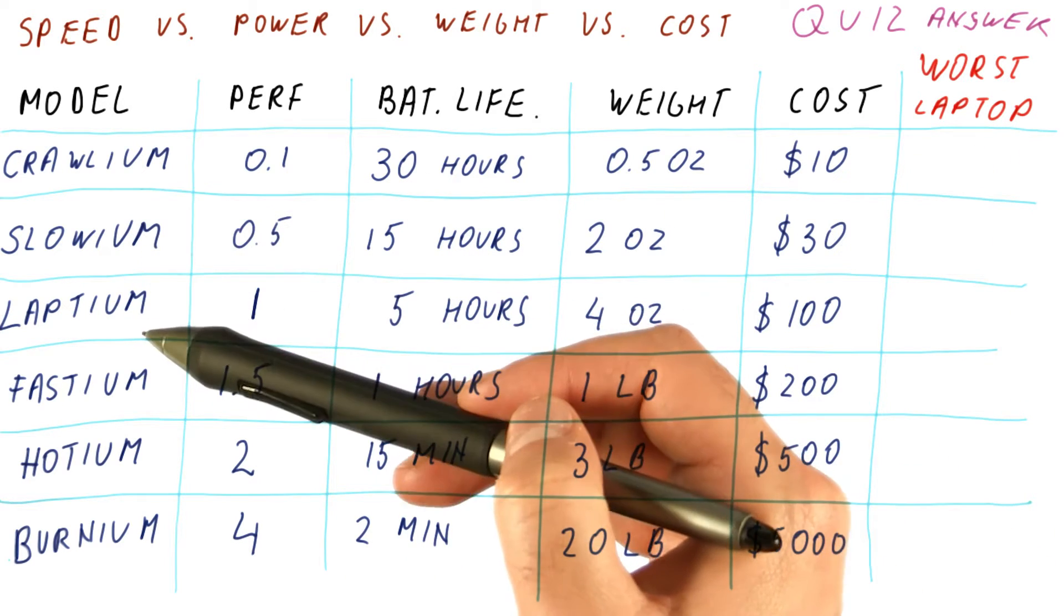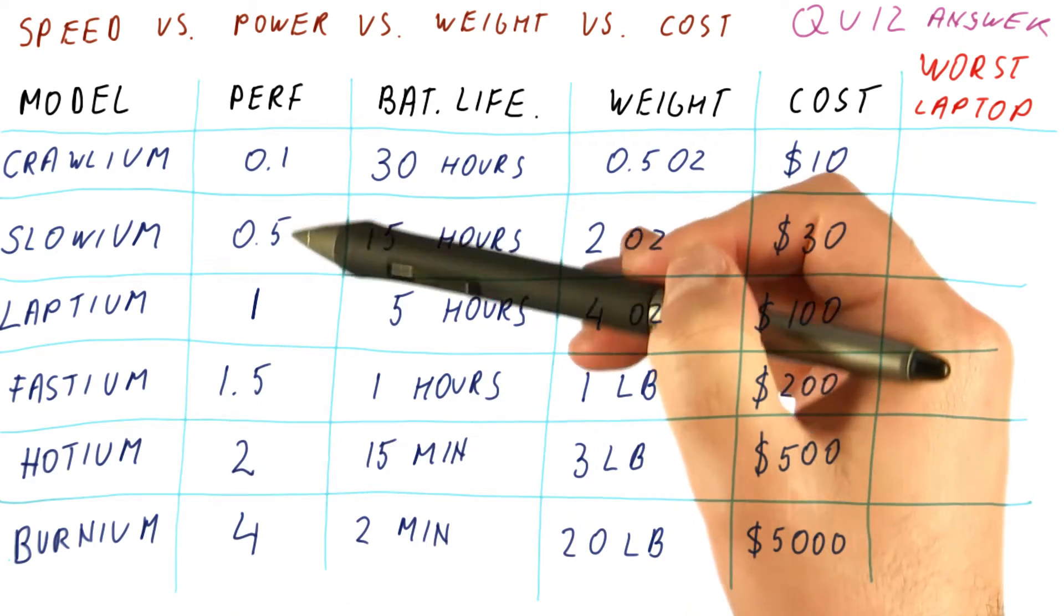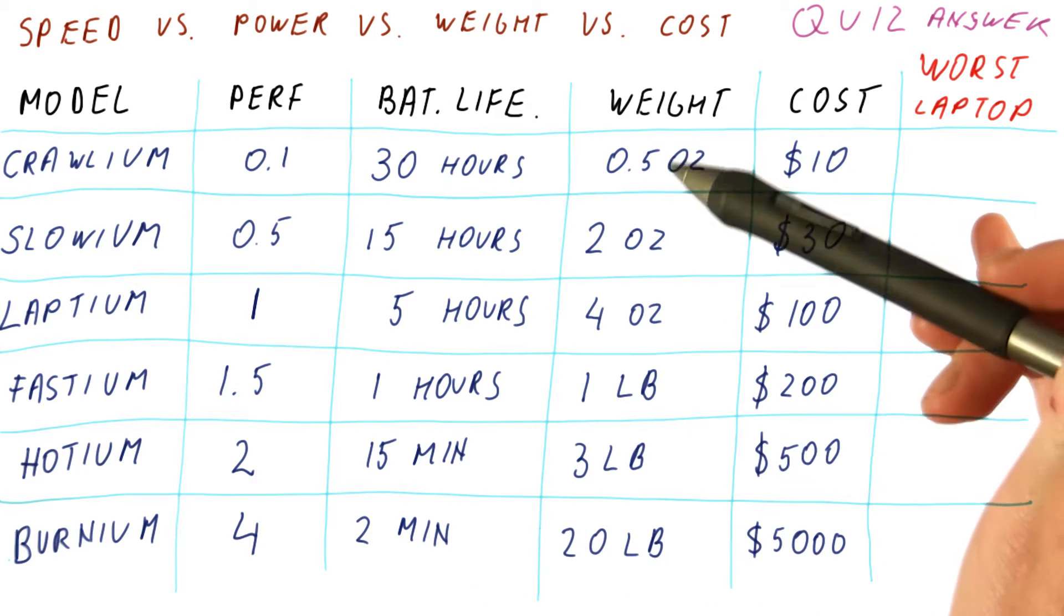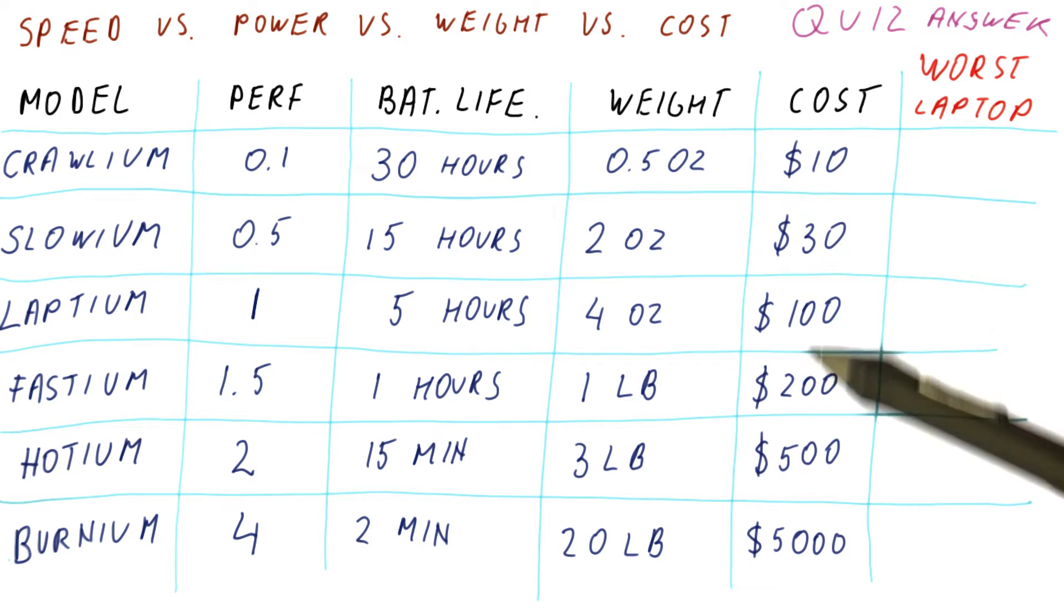The Crollium, Slowium, Laptium, Fastium, Hotium, and Burnium, where performance is growing, but the battery life is decreasing. The weight is growing, and the cost is growing.